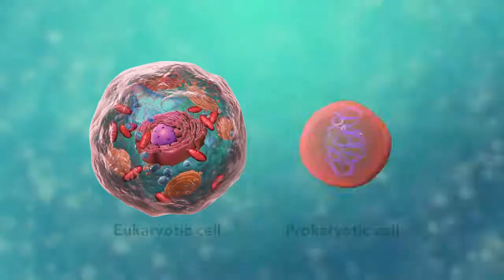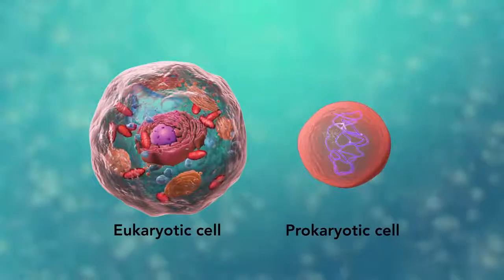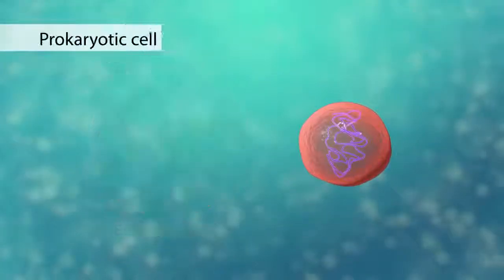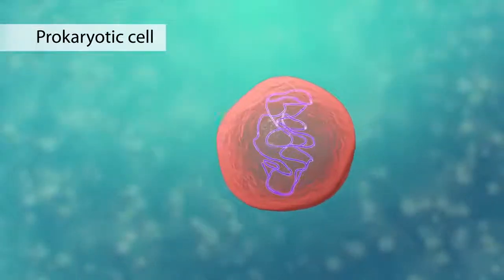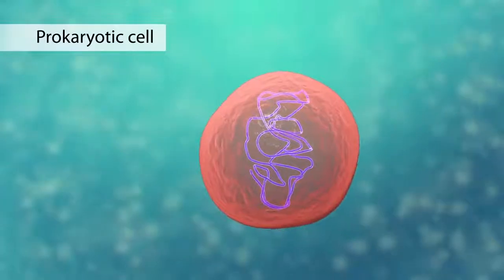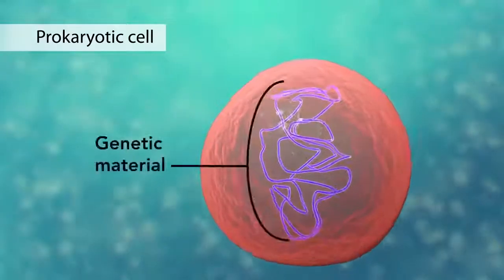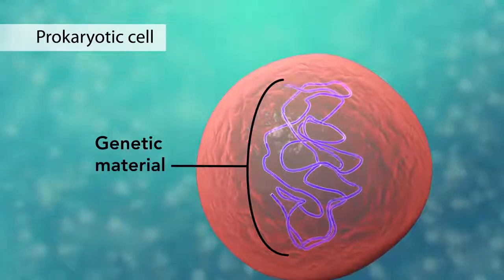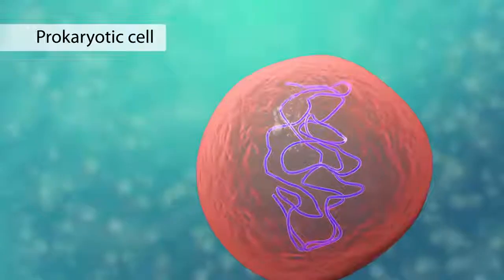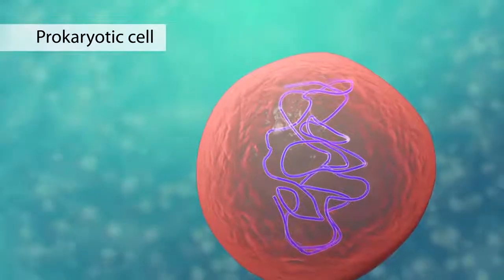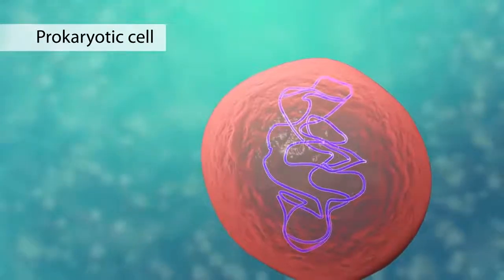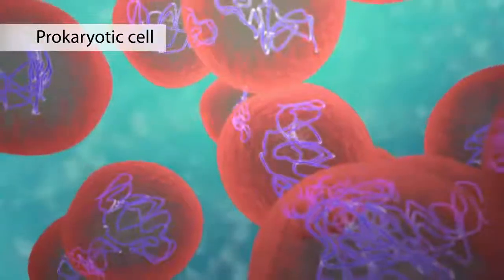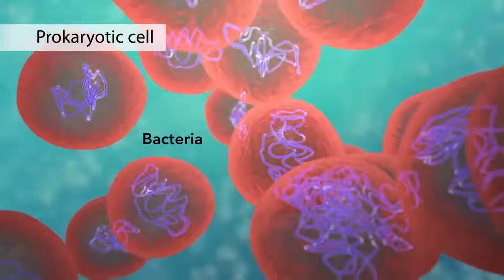The second category is prokaryotic cells. They don't have a nucleus or membrane-enclosed organelles. They do have genetic material, but it's not contained within a nucleus. Prokaryotic cells are always one-celled or unicellular organisms, such as bacteria.